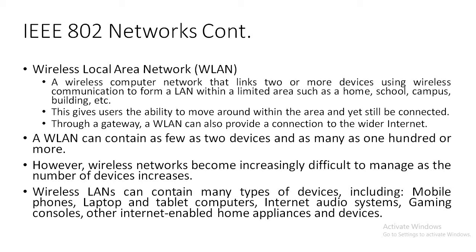A wireless local area network can contain many types of devices. It may include mobile phones, laptop and tablet computers, internet audio systems, gaming consoles, and other internet-enabled home appliances and devices. The wireless local area network range extends up to a home, campus, school, or building.